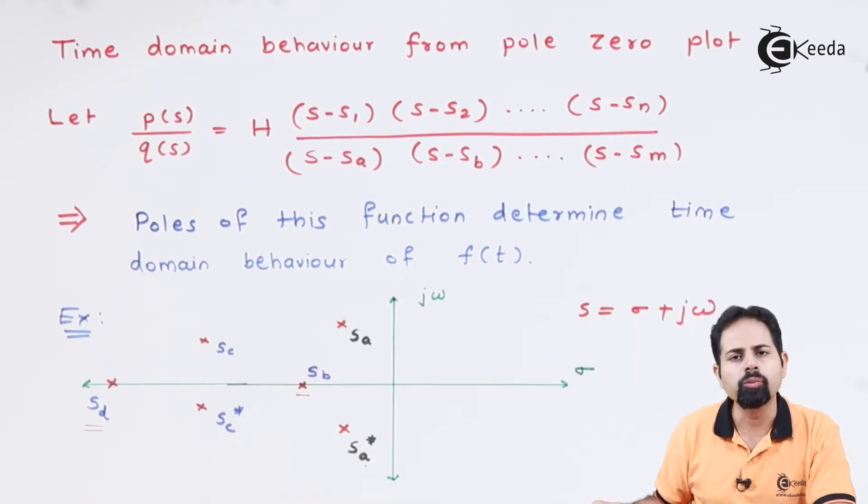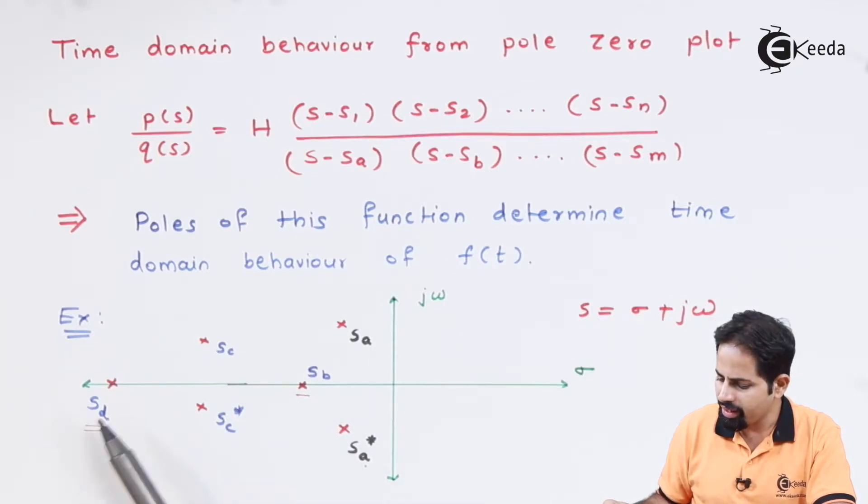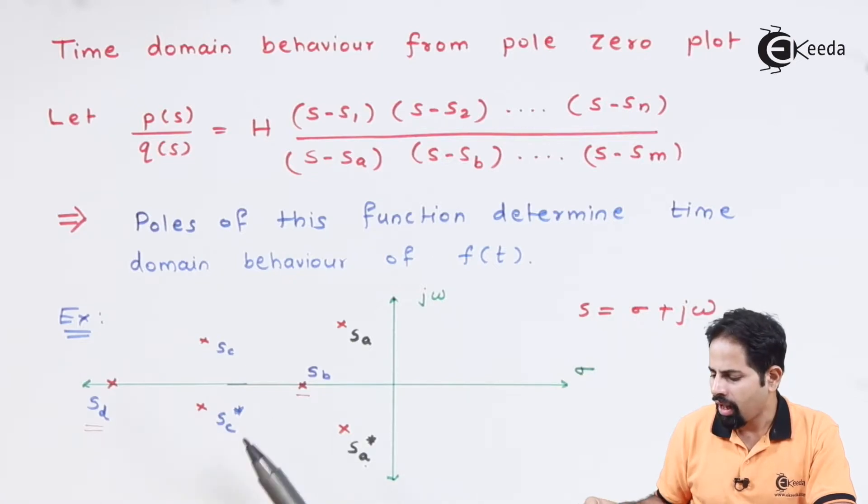Now what we are going to do, for these pair of poles you can see here it is sa, sa conjugate, sc, sc conjugate, and b and d are separate poles. How to obtain their time domain behavior is what we will see.